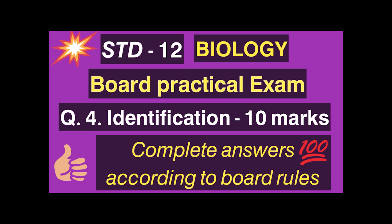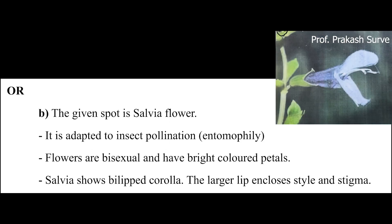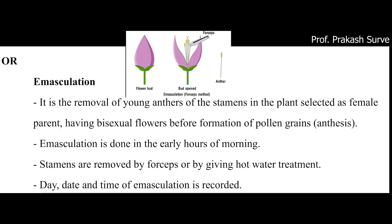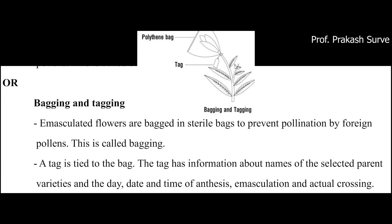Start with spot A, where you may have the maize flower or maybe a salvia flower. Here it may be a photograph or a preserved specimen. Next is about the control measures of pollination, in which the first step is emasculation, or maybe the second step is bagging, or maybe the third step is bagging and tagging. Here you have to identify and describe.